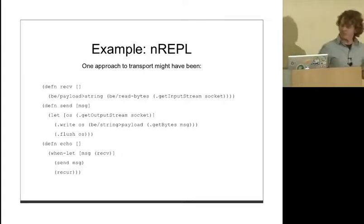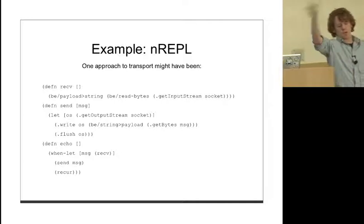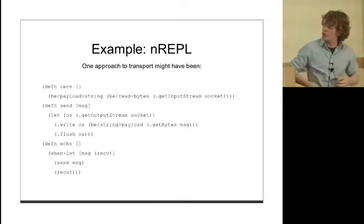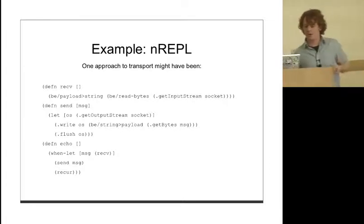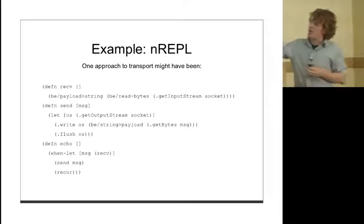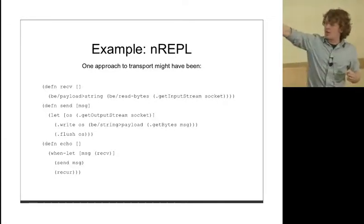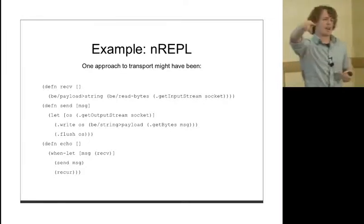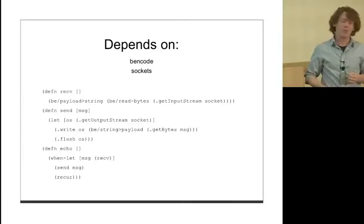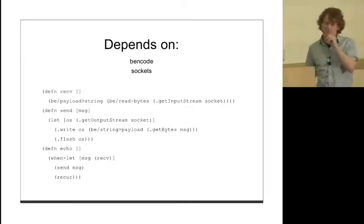Who's familiar with nREPL? It's a networked REPL tool that allows you to serve up an interface so other people can hook in and execute code on your running Clojure process. This is Chas Emmerich's - well, this is not Chas's code, I made this up, it's similar. But this is what would have happened if Chas had done a naive approach. He's using Bencode here, reading some bytes from a socket and changing into string. We've got send and receive as our two main things, and then at the bottom we've got sort of an echo server.